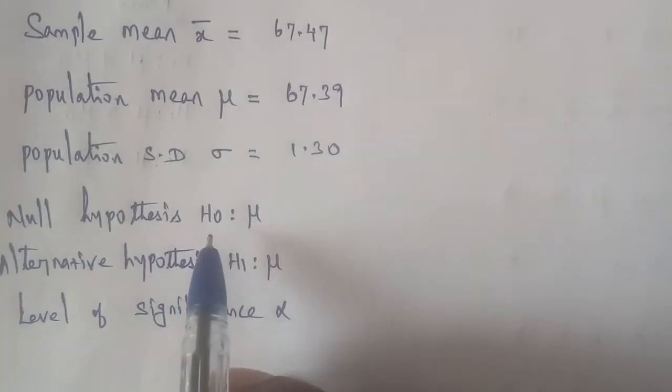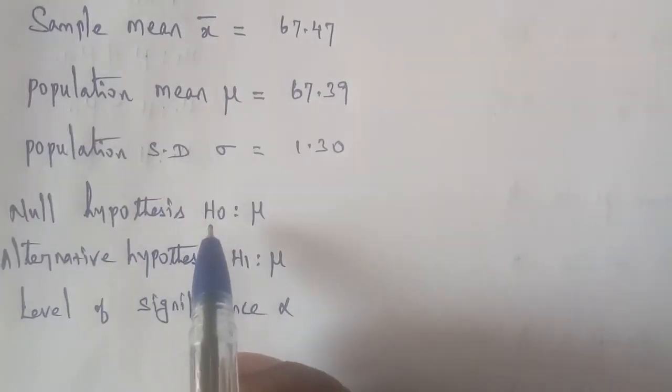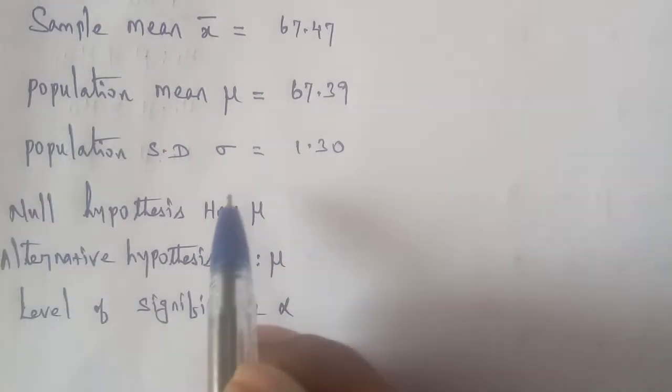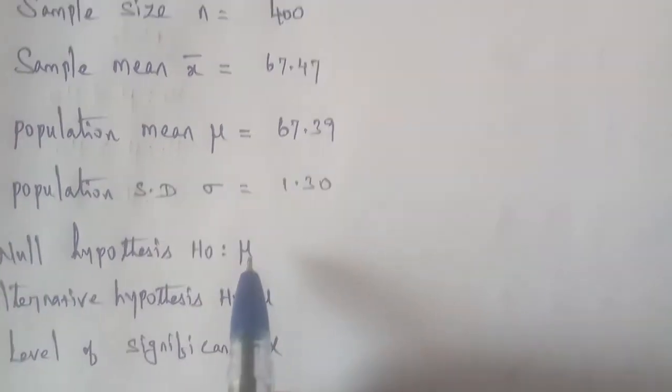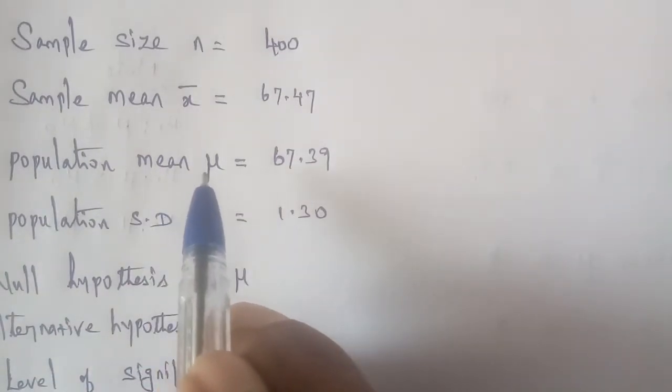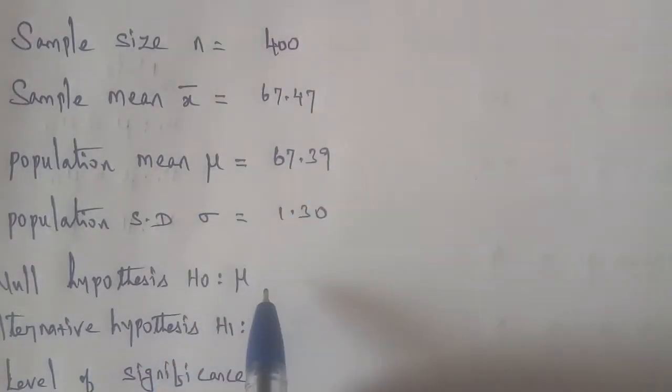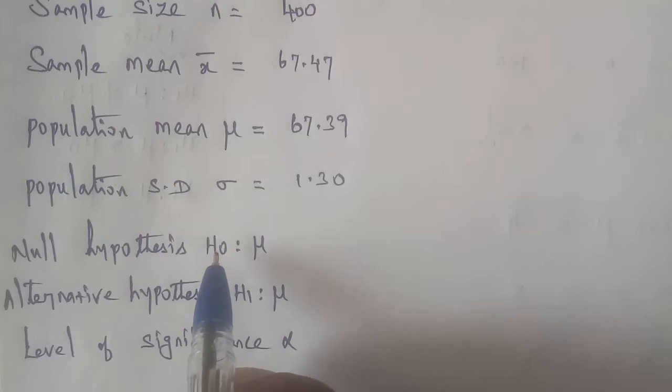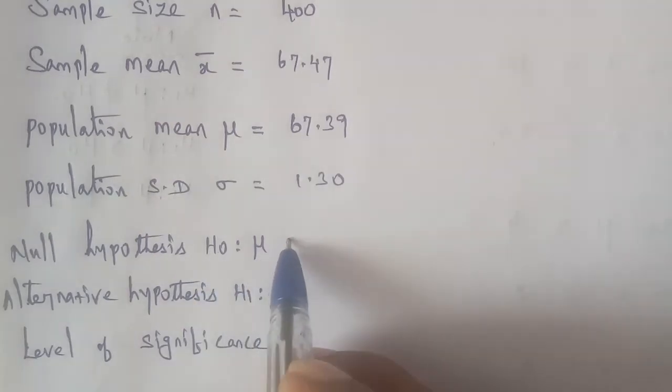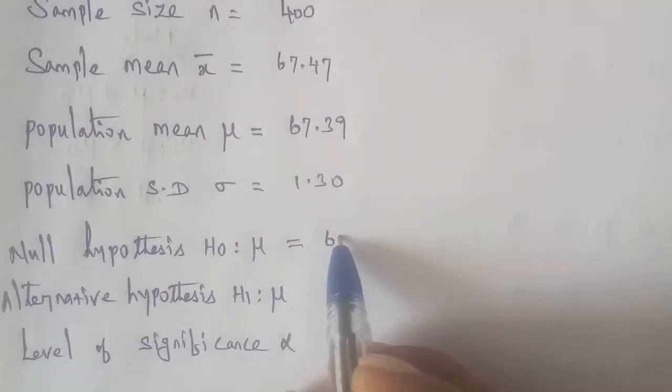Third step: null hypothesis. The null hypothesis, H₀, is that μ, the population mean, equals 67.39. So null hypothesis: μ equals 67.39.